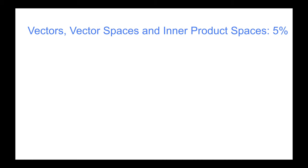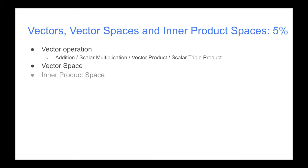Then when it comes to vectors, vector spaces, and inner product spaces, this is 5%. Here we need to do vector operations, which is addition, scalar multiplication, vector product, scalar triple product, vector spaces, inner product space, and orthogonality. Like I say, the pronunciation of some of these things is a bit tricky.